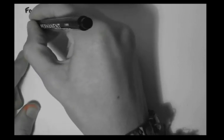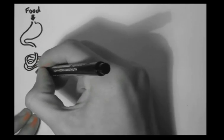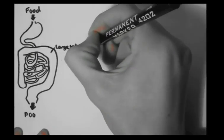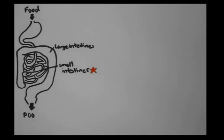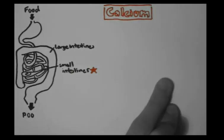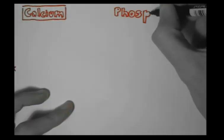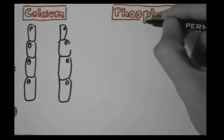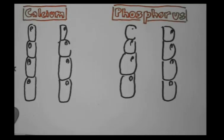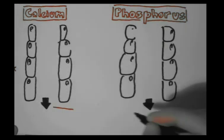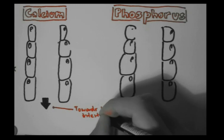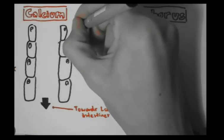Food gets eaten and goes towards the stomach, through the intestines, and out as feces. The intestines are made up of the large and small intestine. We will be looking at the small intestine, where calcium and phosphorus are predominantly absorbed.